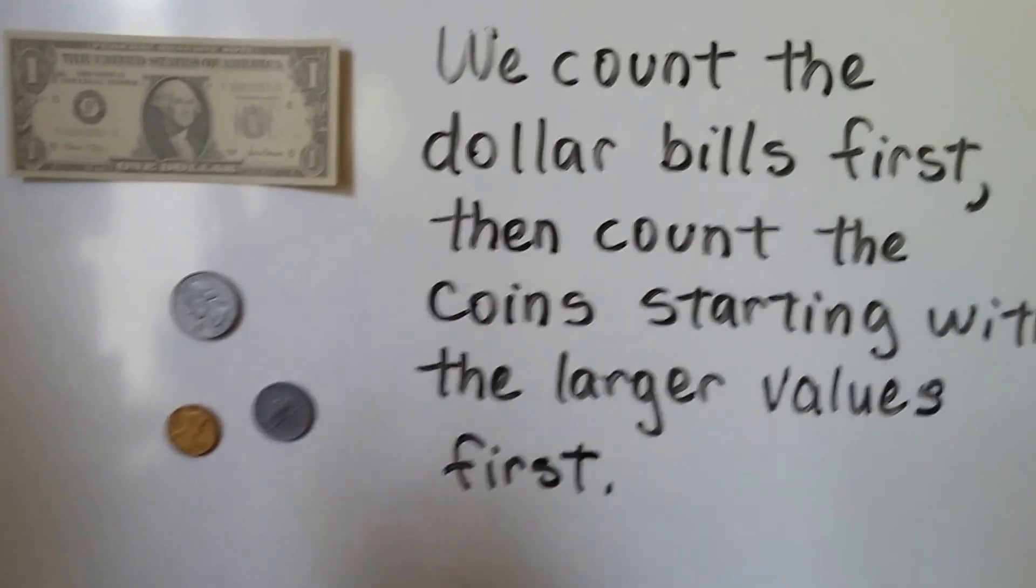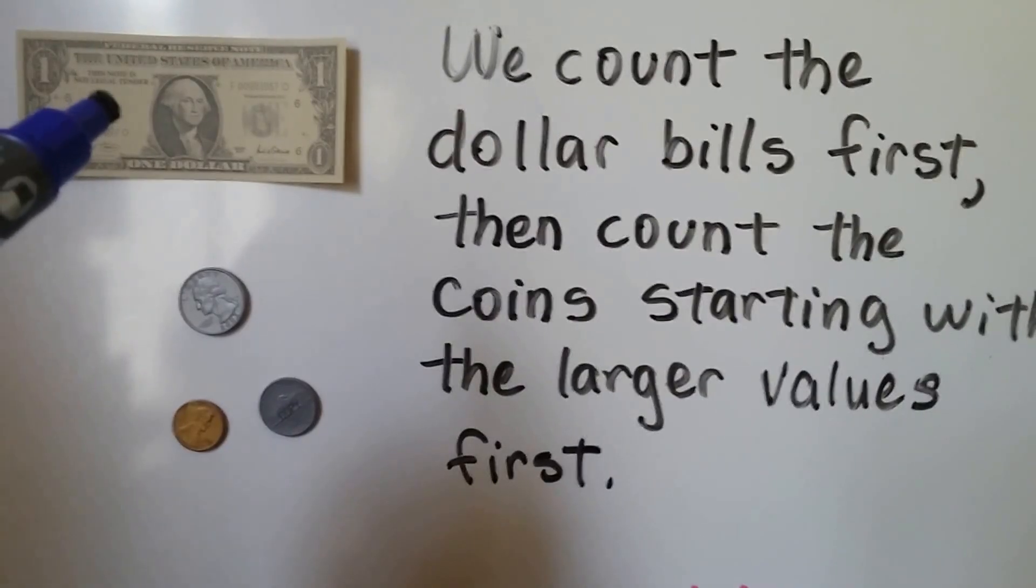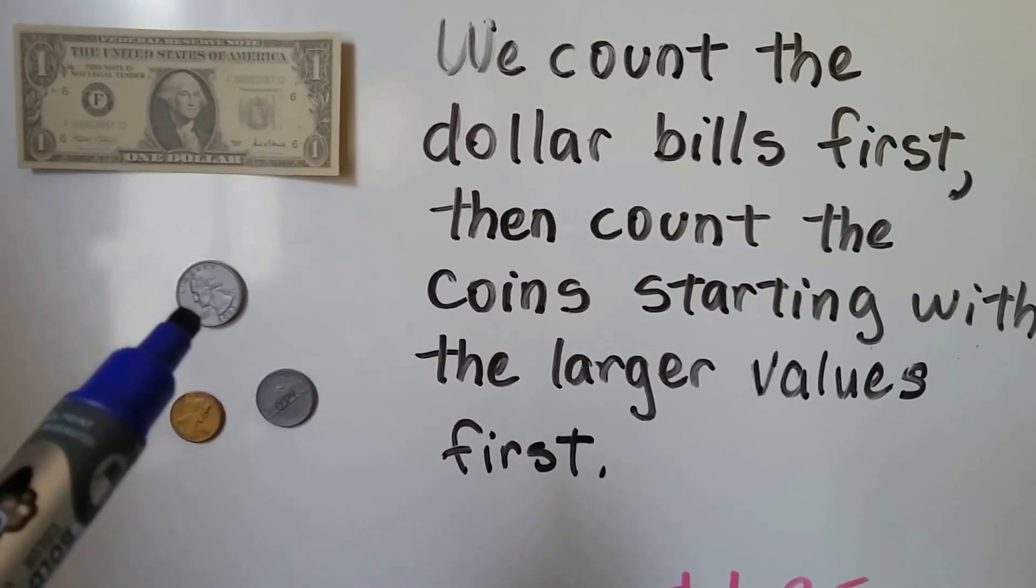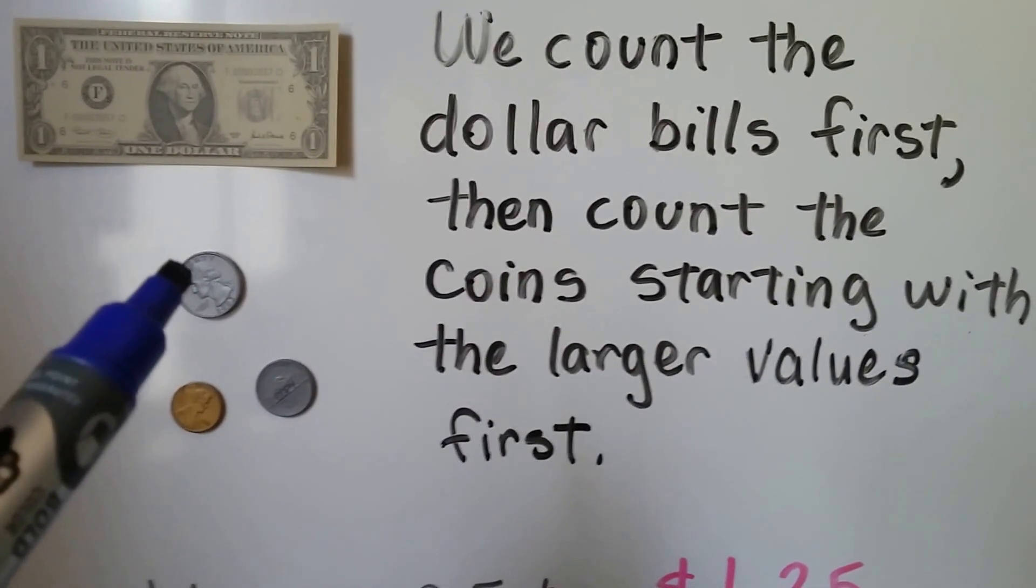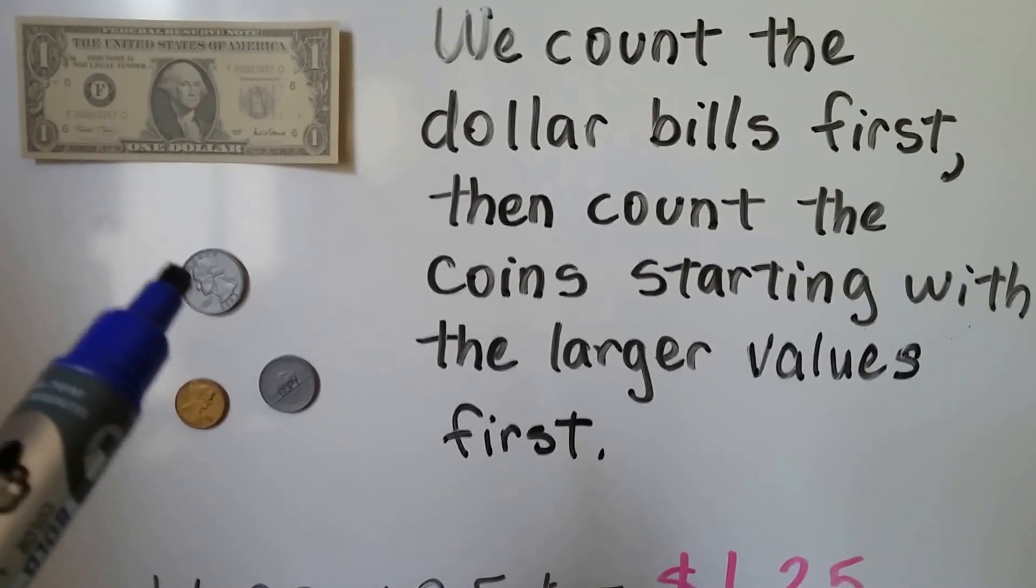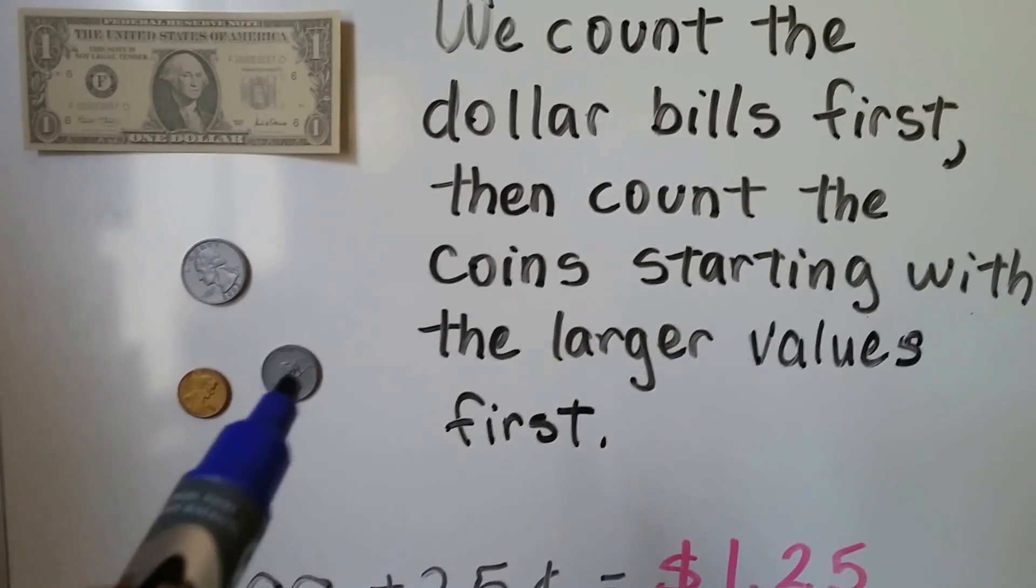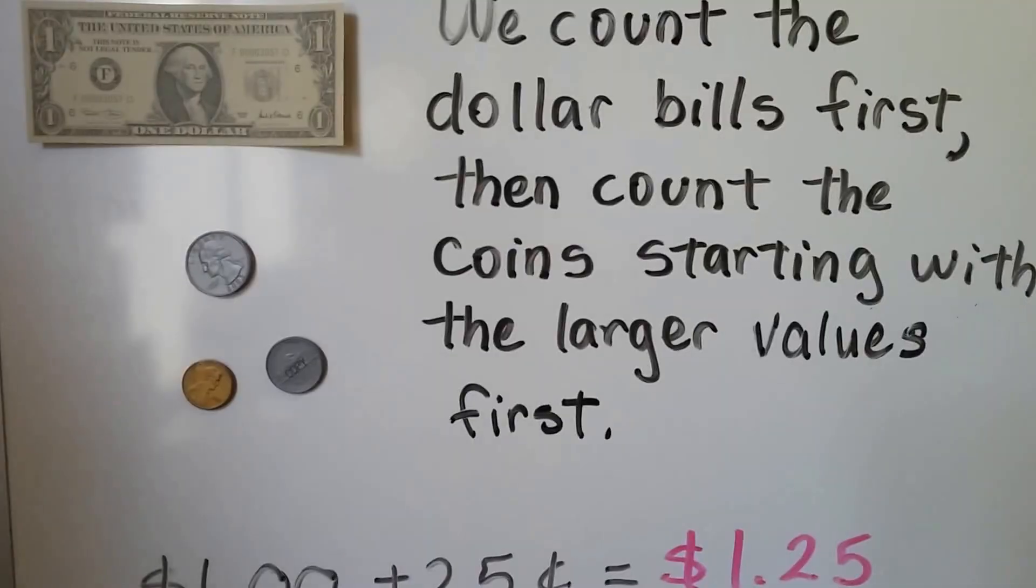So to count this money right here we would start with the dollar and then we would start counting the coins that are worth more first. We have a quarter that's 25 cents, a nickel that's 5 cents, and a penny that's 1 cent.